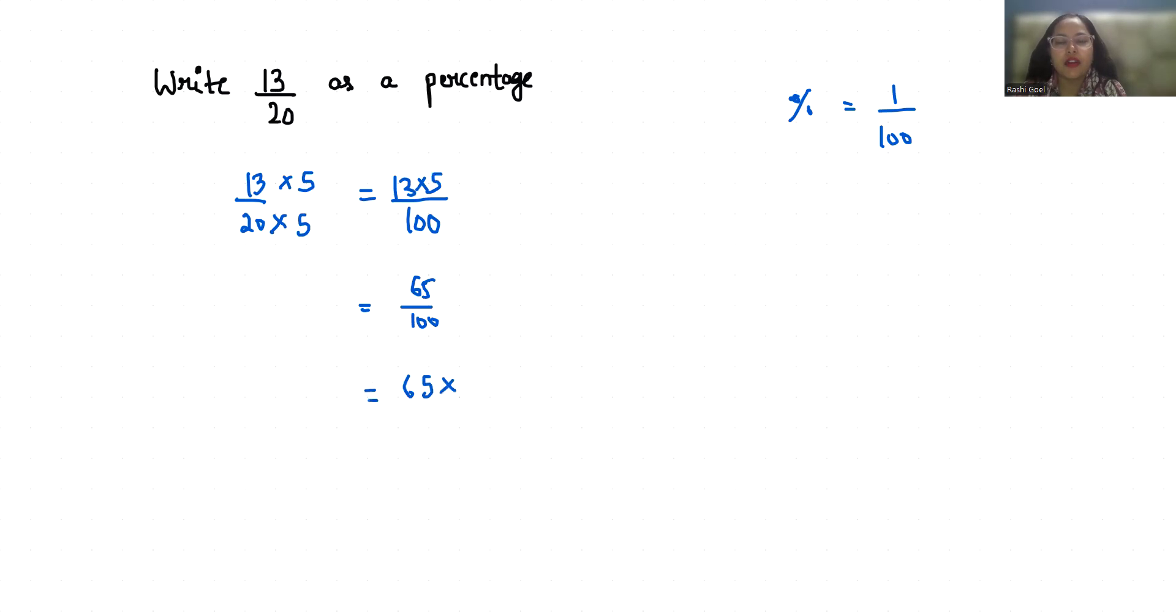And this 1 by 100 we can replace with percent, so it is 65 percent. So 13 by 20 in terms of percent is 65 percent. I hope it's clear and you find it useful.